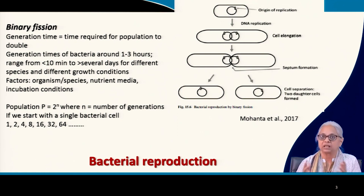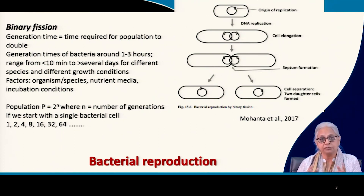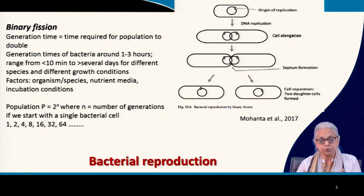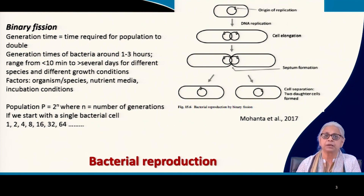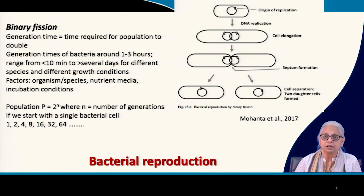The same species under different growth conditions will have a different growth rate. The factors that affect bacterial reproduction are: first, the species itself — different organisms have species-specific growth rates. Second, the nature of the nutrient media — rich media with high nutrient concentration leads to faster reproduction, while low nutrient concentration leads to a slower rate. Third, incubation conditions such as pH, temperature, and pressure all determine the growth rate of the organism being cultivated.